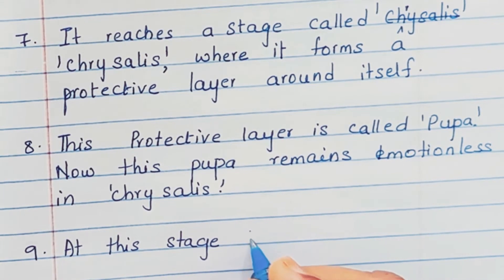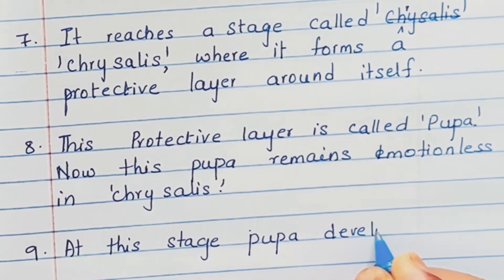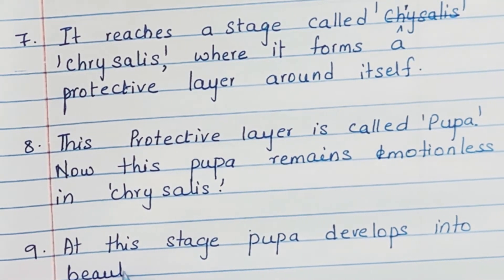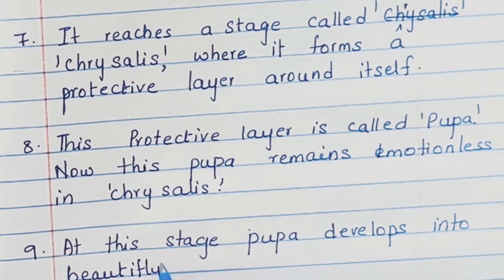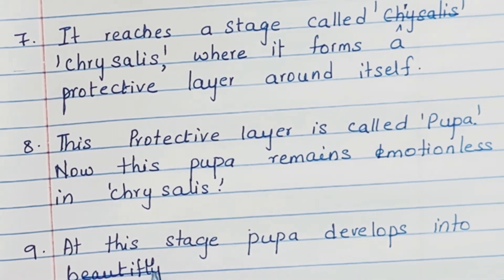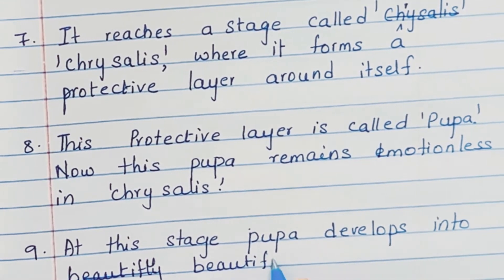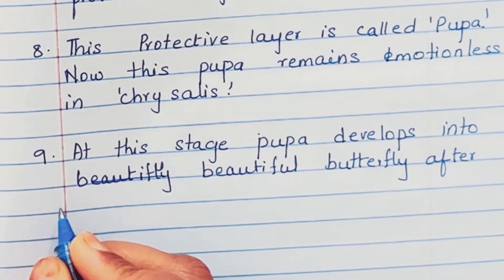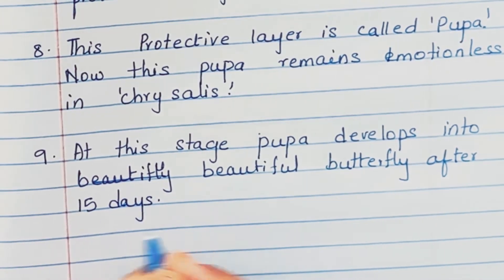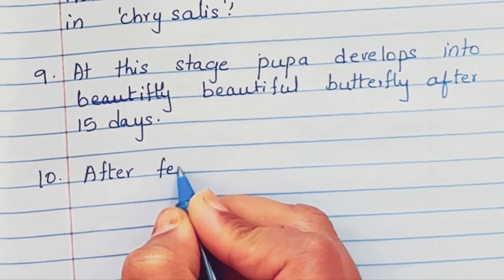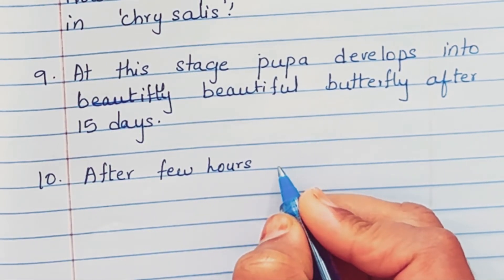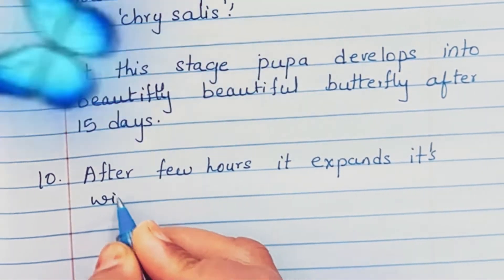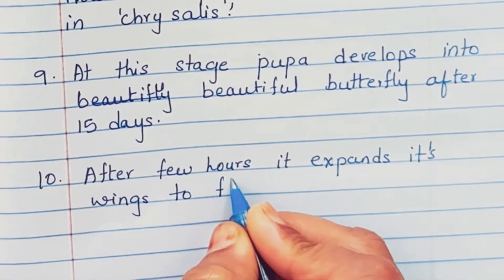Ninth point: at this stage pupa develops into a beautiful butterfly. It expands its wings to fly.